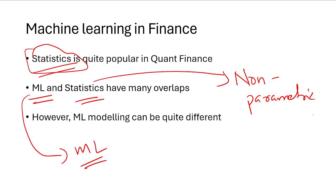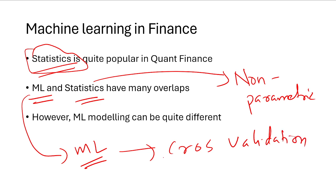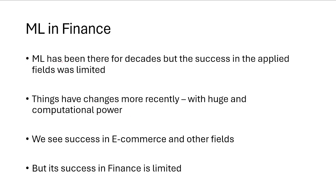Machine learning goes beyond the non-parametric modeling techniques found in statistics. The way you build ML models is quite different — especially cross-validation, feature engineering, and selecting the best set of features from many candidates. These techniques are very unique to machine learning compared to statistics, but for a variety of reasons, statistics is still quite popular in quant finance.